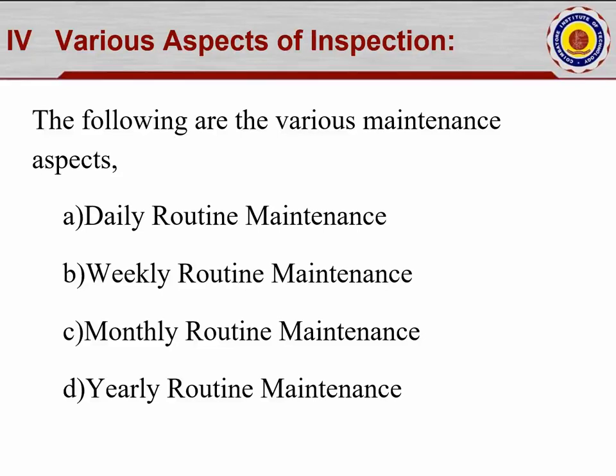The next topic covers various aspects of inspection. The following are the various maintenance aspects: number one, daily routine maintenance; number two, weekly routine maintenance; number three, monthly routine maintenance; number four, yearly routine maintenance. The inspection has been divided into four categories depending upon the structural elements or other parts.